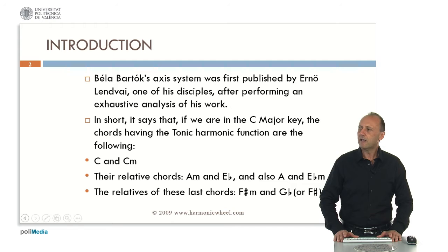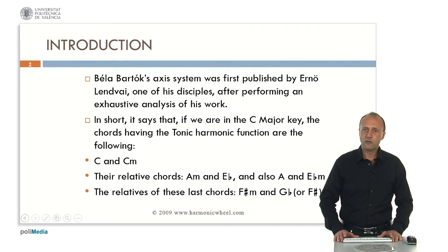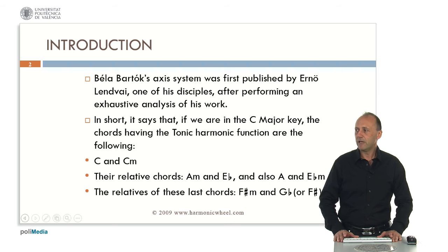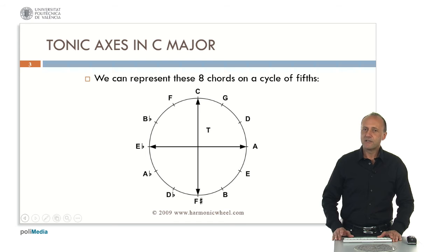He also found a special system of axes, which says that if we are in the C major key, the chords with the tonic harmonic function are not only C major, but also those chords obtained by looking for parallel and relative chords. Starting with C major, we find the parallel C minor, the relative chords A minor and E flat major, the parallel of these two chords — A major and E flat minor — and the relatives of these last chords: F sharp minor and G flat major or F sharp major.